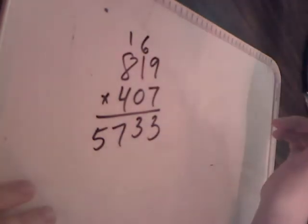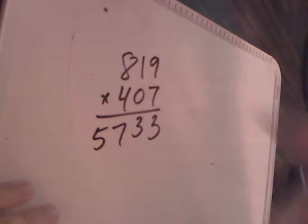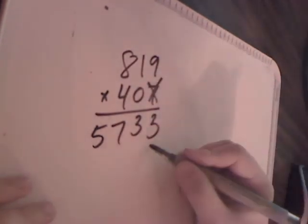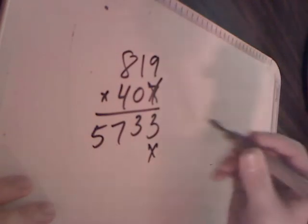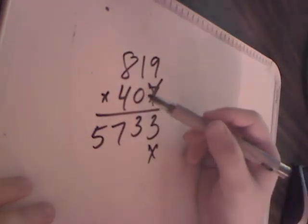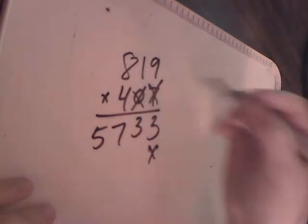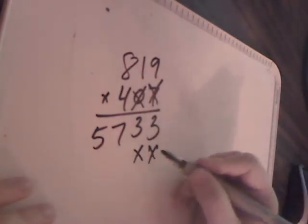Those numbers up there that we carried, we don't need those anymore. Those are going to go away. We're done with the 7. So we're going to put an x here. We're also done with the 0, because when you multiply anything times 0, it's just 0. So we're just automatically going to mark that off.